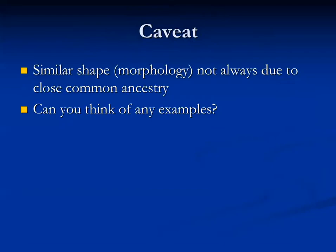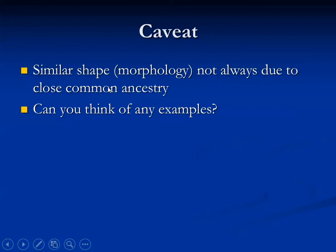But there is a caveat. 'Caveat' comes from a Latin word meaning warning. So here's your warning: if you're classifying animals or other living things according to their structures, similar shapes and similar morphologies are not always due to close common ancestry.